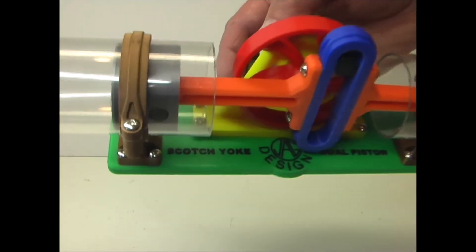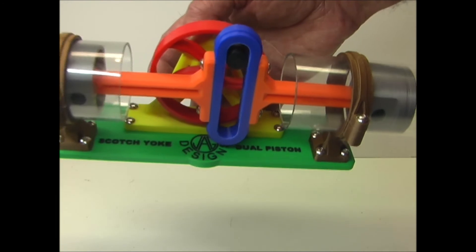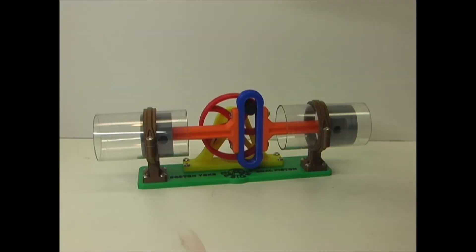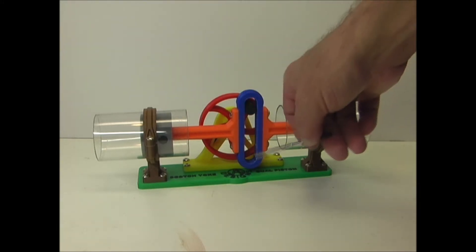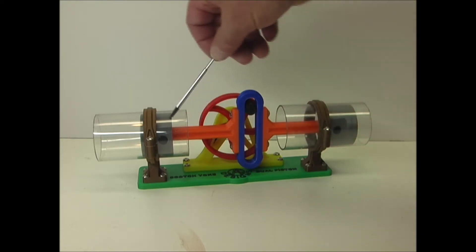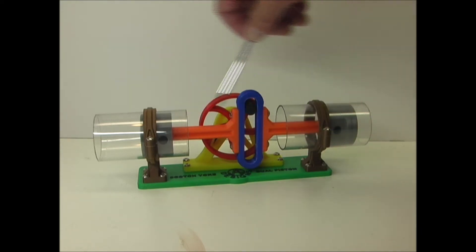This one is a Scotch Yolk dual piston design. It has the wheel and the slide like a Scotch Yolk. There's also two connecting rods, pistons, and cylinders.